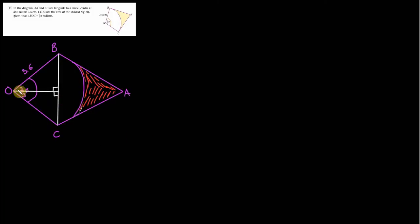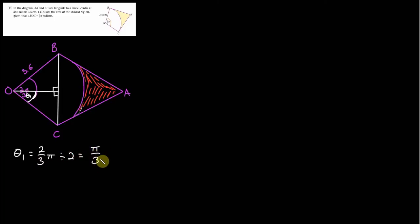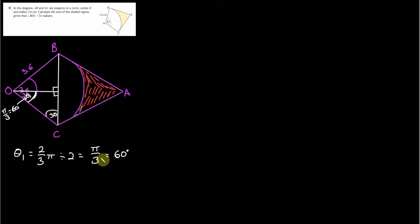First thing we need to do is find this angle here. We know that the larger angle is 2/3 π. So let's call this θ₁. θ₁ is going to be half of 2/3 π, because it's cut right down the middle. So 2/3 π divided by 2 gives us π/3, and that's this angle here — π/3, which is 60 degrees. We know this angle is 90, we know this is 60, which means this has to be 30. It's a 30-60-90 triangle, and that gives us a lot.